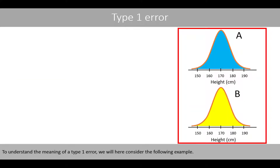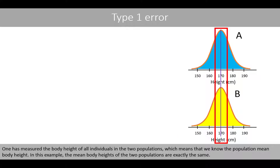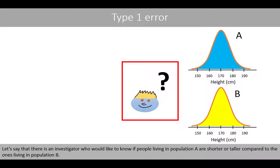To understand the meaning of a type 1 error, we will consider the following example. Suppose that population A and B represent people living in two different populations. One has measured the body height of all individuals in the two populations, which means that we know the population mean body height. In this example, the mean body heights of the two populations are exactly the same. An investigator would like to know if people living in population A are shorter or taller compared to the ones living in population B.